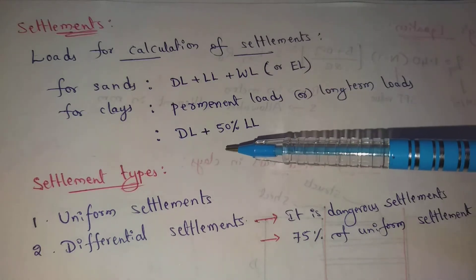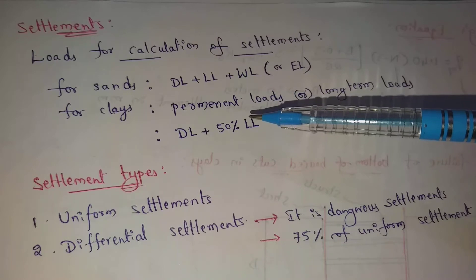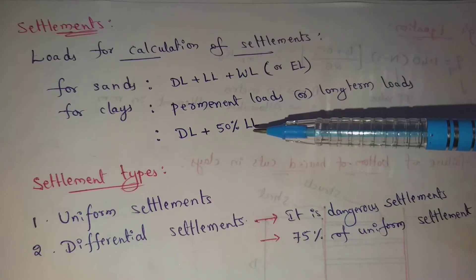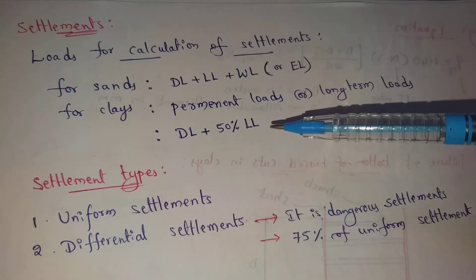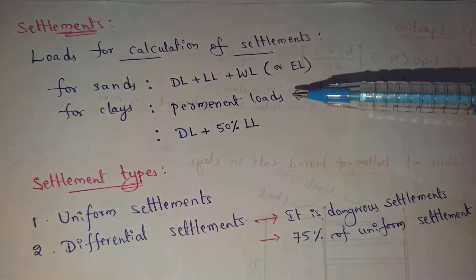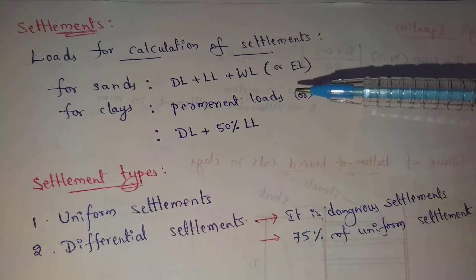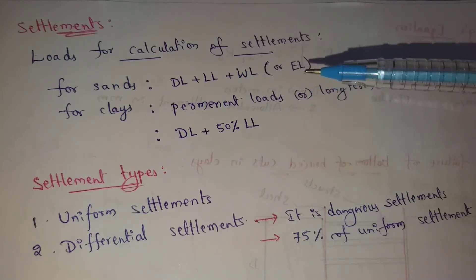In these permanent loads, dead load is common. Dead load is a permanent load. So for settlement calculation, we use dead load plus 50% of live load. Generally, we consider 50% live load.